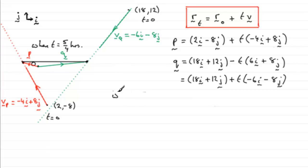So when T equals five upon four, we've got that P equals 2I minus 8J plus five over four multiplied by minus 4I plus 8J. And what does that give us? So if we work this out, for the I component we've got 2 plus five upon four times minus 4. That gives us minus 3I. And for the J component, we just need to do minus 8 plus five upon four times plus 8. And that comes out to be plus 2, two in the J direction.